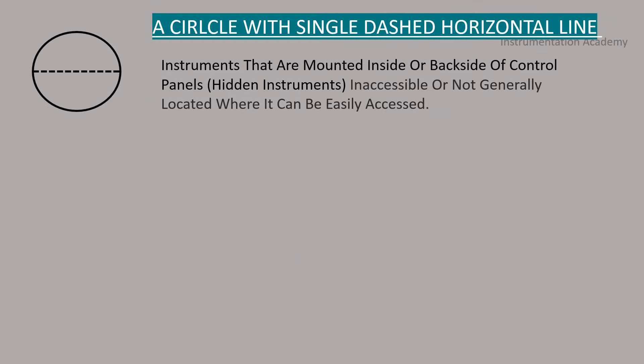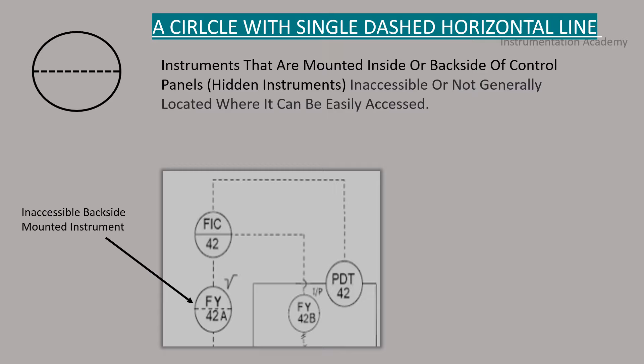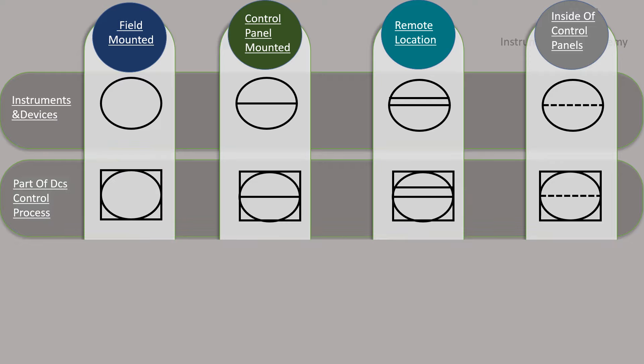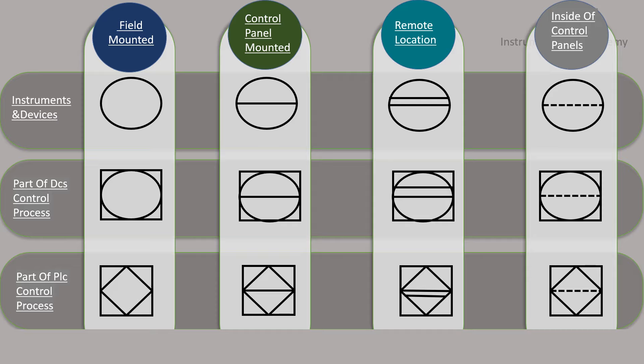A circle with single dashed horizontal line. This represents the instruments that are mounted inside or back side of the control panel which are generally inaccessible. These are the symbols associated with instruments. If these symbols are enclosed within a square, it means that they are a part of DCS control process. If the shape of the symbols are diamond enclosed within a square, it means that they are a part of PLC control process.